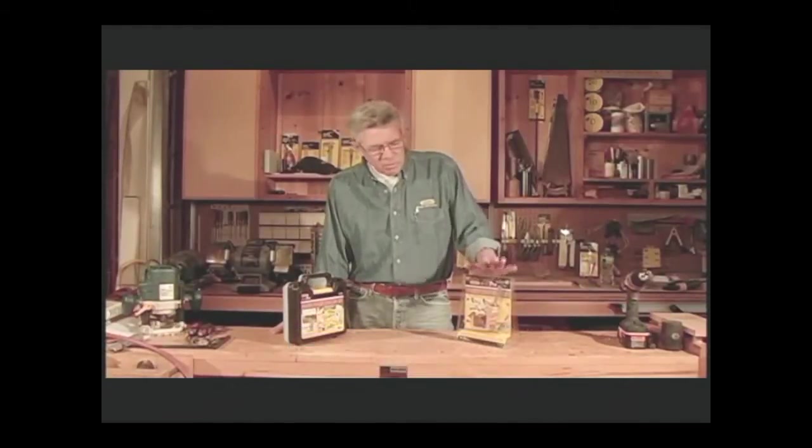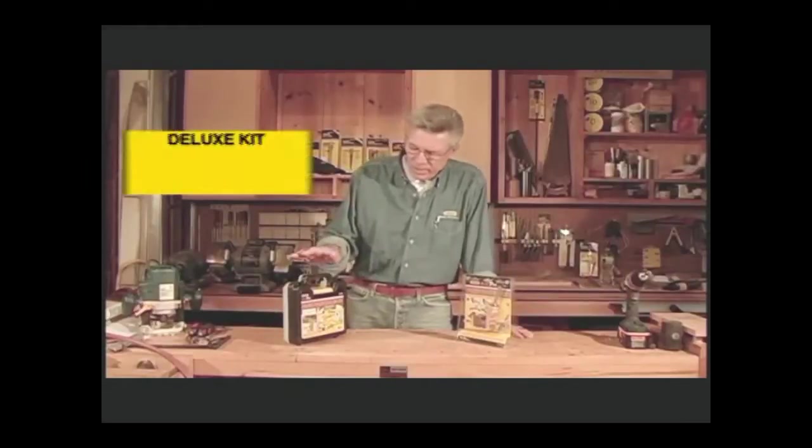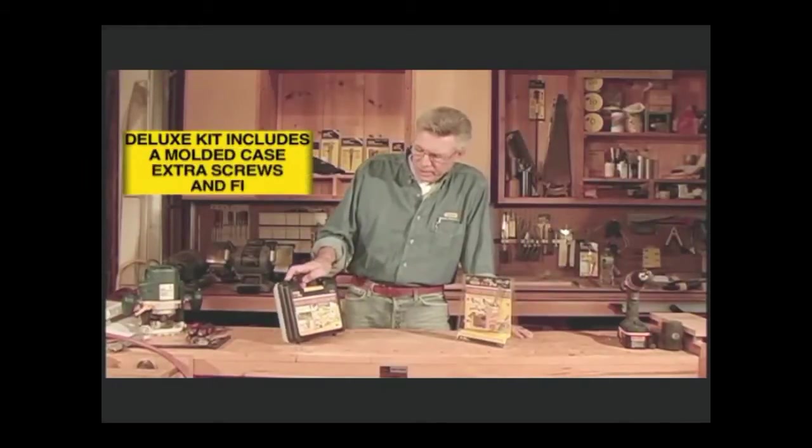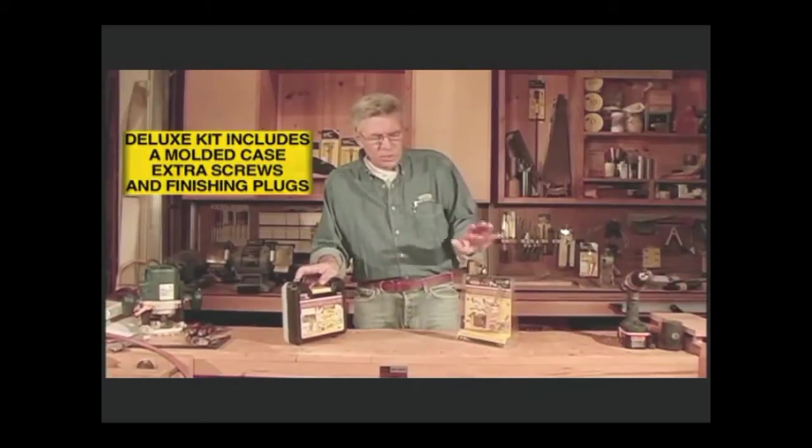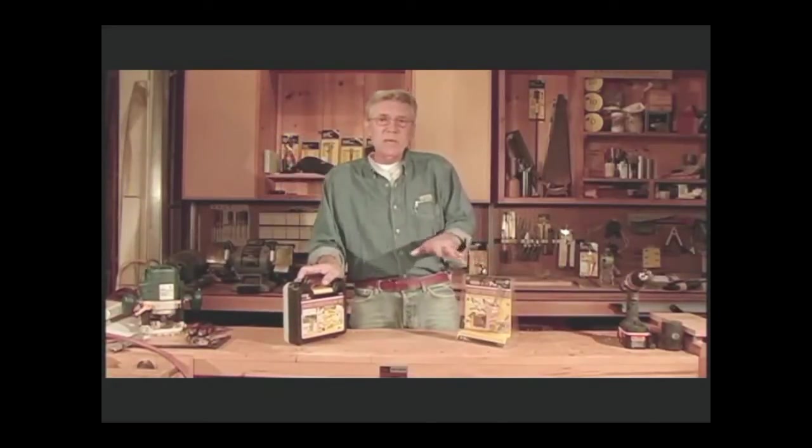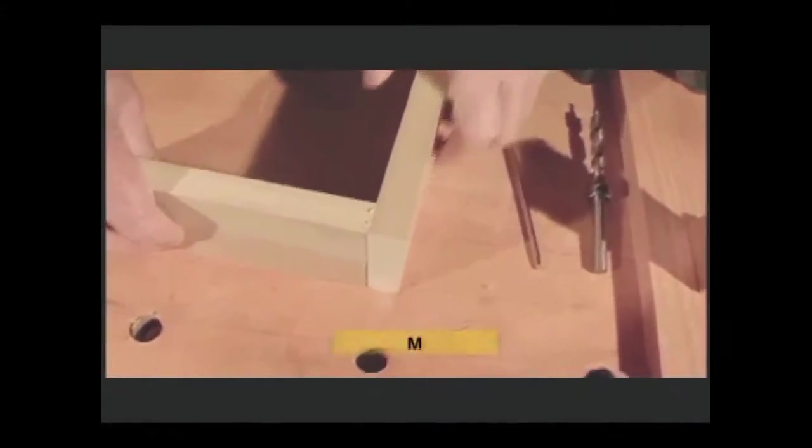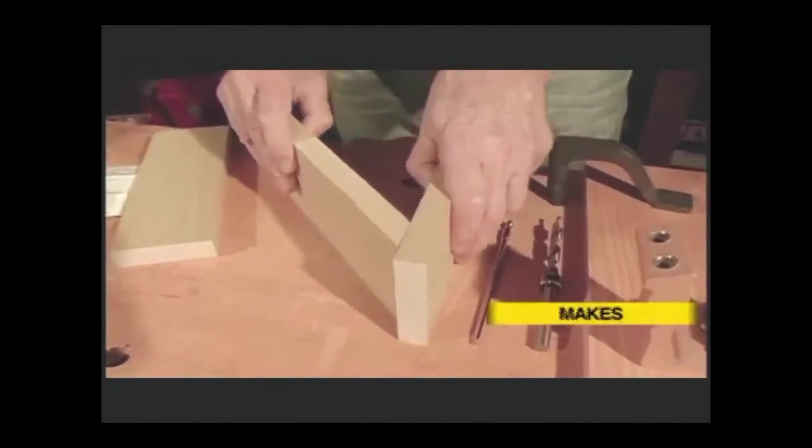It comes in two versions: a basic kit and the Deluxe Jig Kit with a molded case and finishing plugs. You can use either one of these kits to make pocket hole joints on an end-to-end or 90 degree or 45 degree angle joints in woodwork.